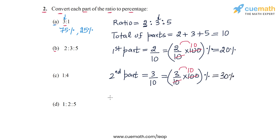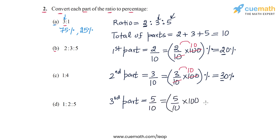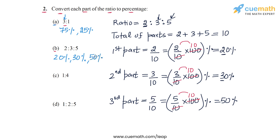To calculate the third part, we can either add the first and second part percentages — 20% and 30%, that's 50% — and subtract from 100%, or follow the same method: the third part is 5 divided by total of parts, so 5 by 10. As a percentage: 5 by 10 into 100 — 100 by 10 is 10, and 5 into 10 is 50. So this is 50%. The answer for part B: the parts expressed in percentage form are 20%, 30%, and 50%.